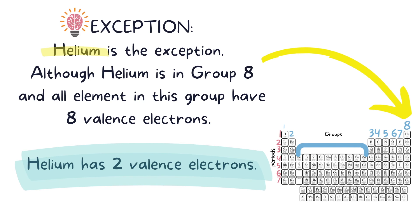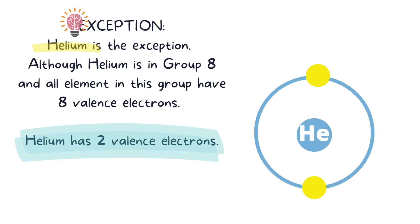So one last thing I want to add: the group eight elements all have eight valence electrons, and that's totally normal, but there is one exception — and that exception is helium. Helium actually only has two electrons, so it can only have two valence electrons, not eight.